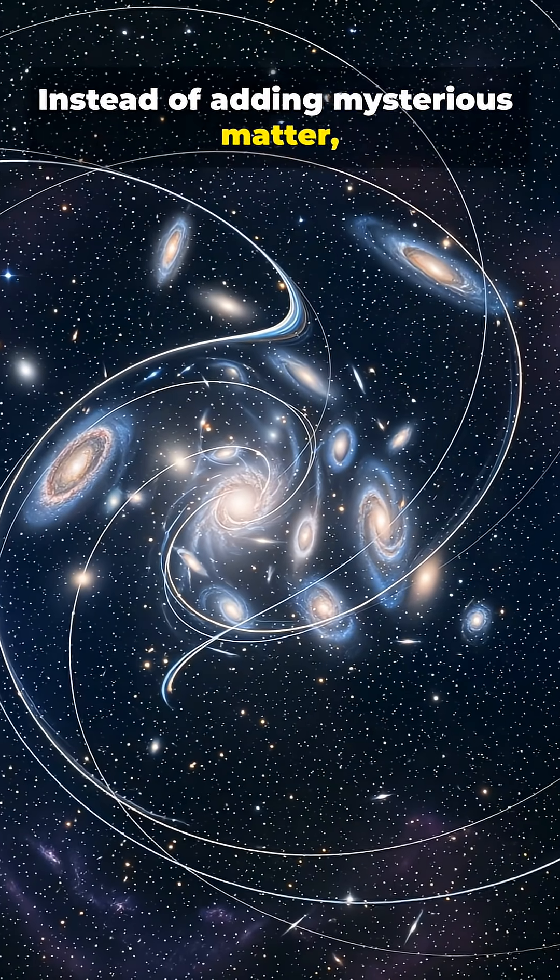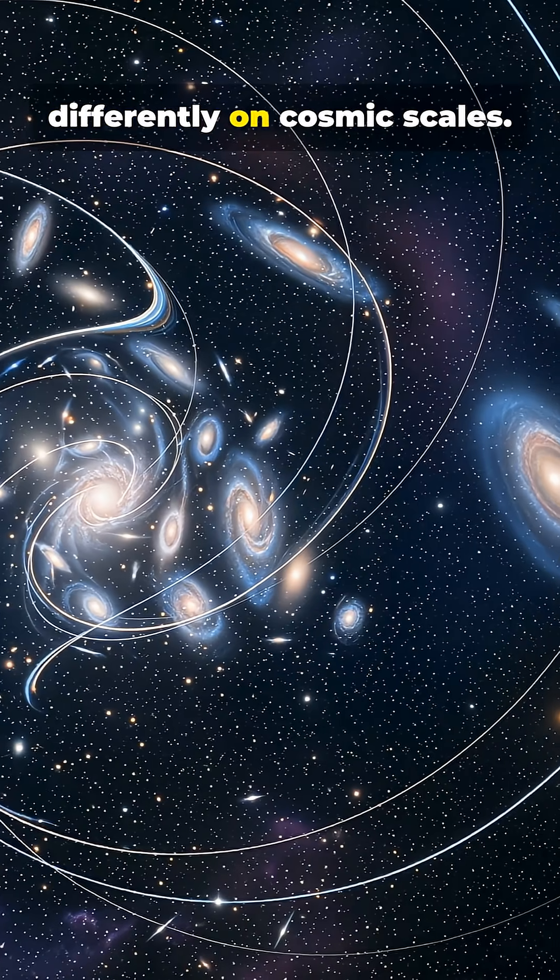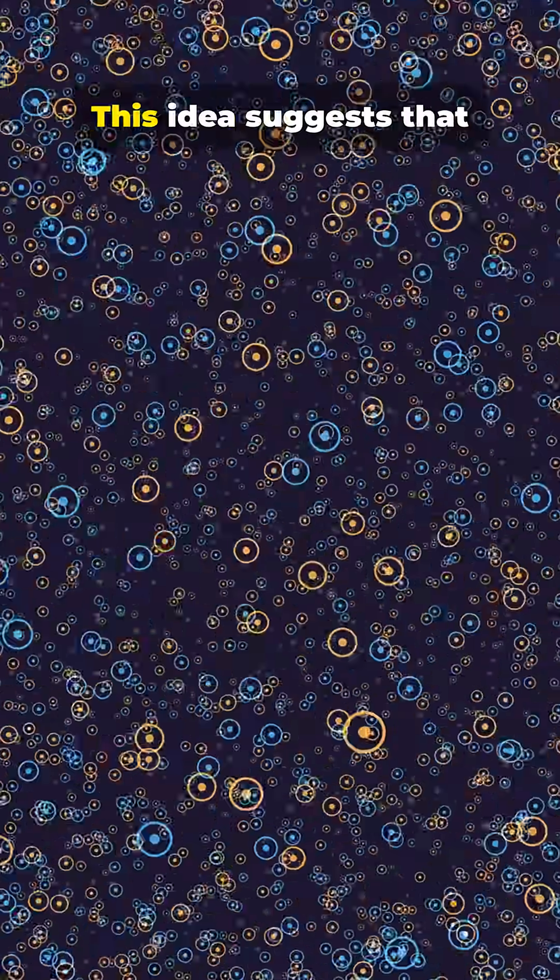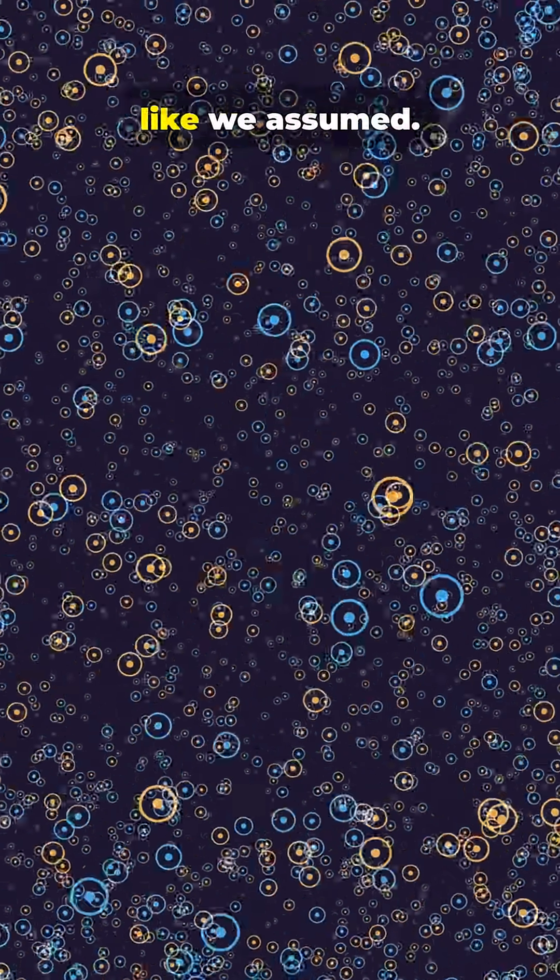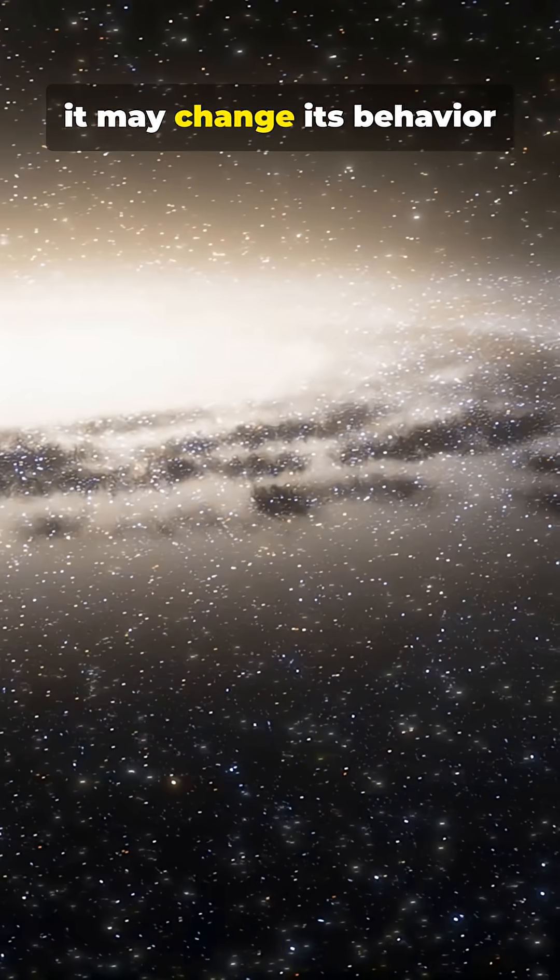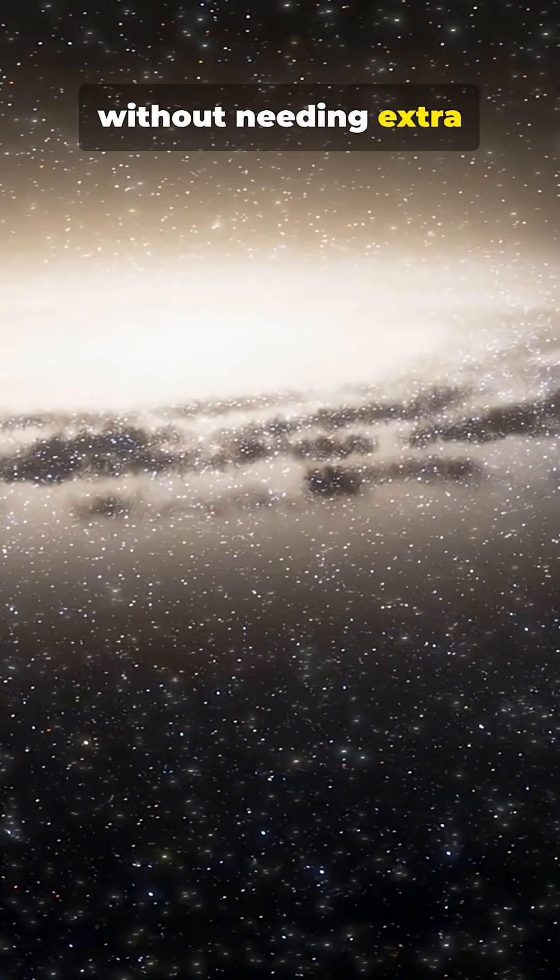Instead of adding mysterious matter, some physicists now think gravity itself may behave differently on cosmic scales. This idea suggests that gravity doesn't weaken smoothly over long distances like we assumed. Instead, it may change its behavior inside galaxies, making stars move faster without needing extra invisible mass.